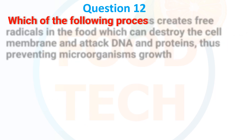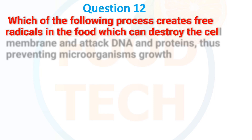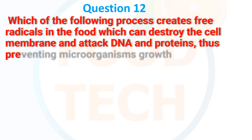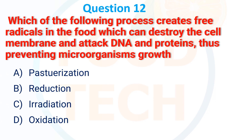Which of the following processes creates free radicals in the food, which can destroy the cell membrane and attack the DNA and proteins, thereby preventing microorganism growth? Options are: A. Pasteurization, B. Reduction, C. Irradiation, D. Oxidation. The correct answer is irradiation.